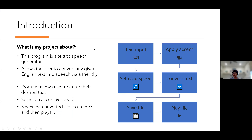This program is a text-to-speech generator. It allows users to input any text through a friendly user interface, then convert it into speech by saving it as a file and then playing it back using the operating system's default player or music app. You can enter your text, apply an accent to it, and adjust the speed from fast to slow.